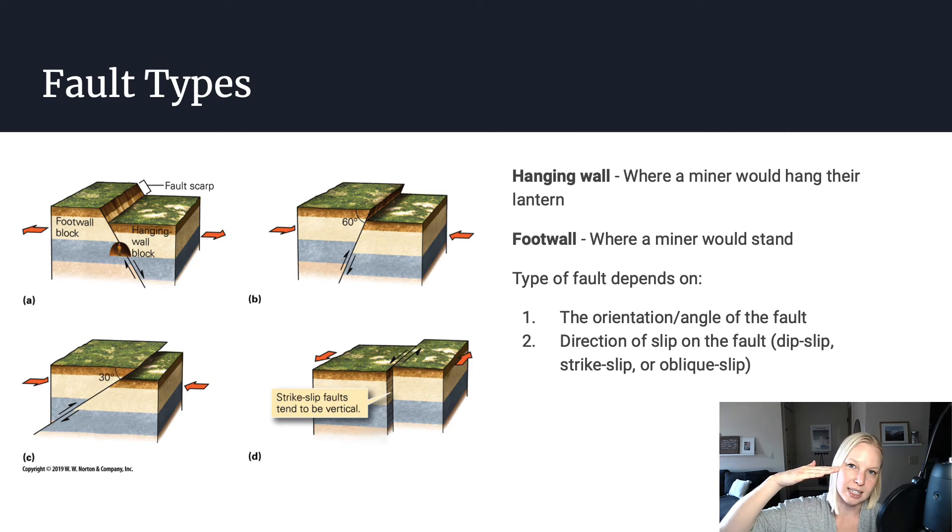So if something has a zero degree dip, that means that it is horizontal. If it has a 30 degree dip, it's not horizontal, it's 30 degrees down from horizontal. 60 degrees would be a little bit steeper, vertical would have a dip of 90 degrees.